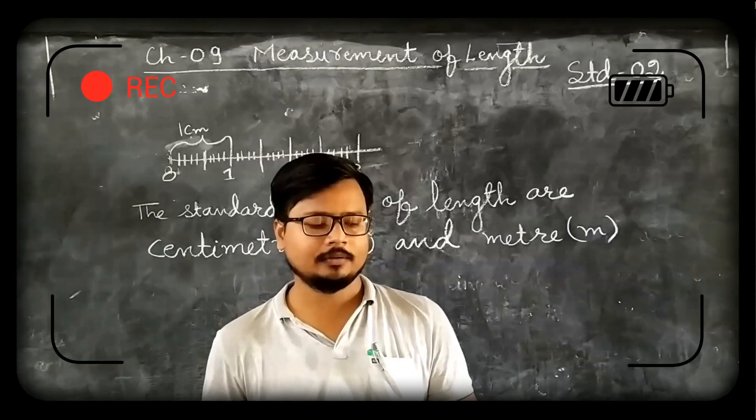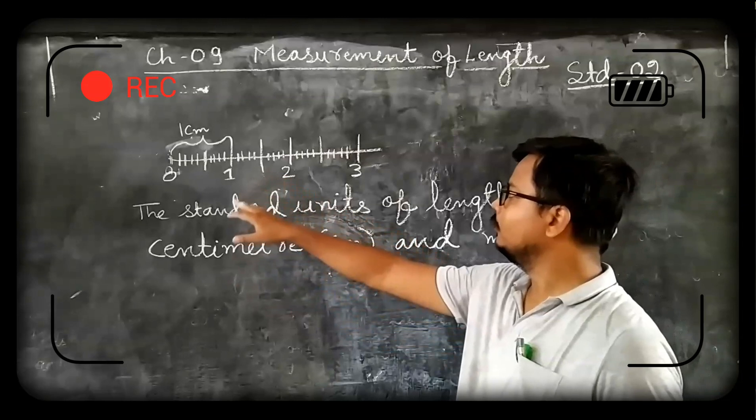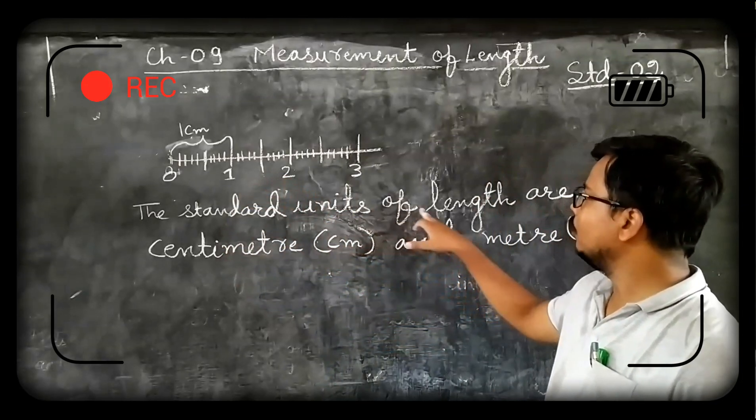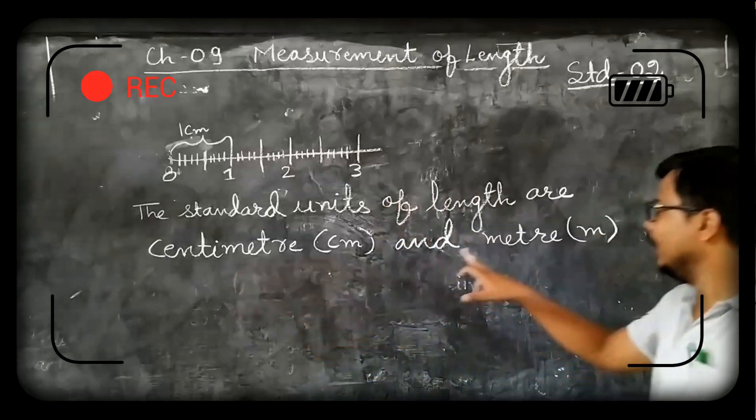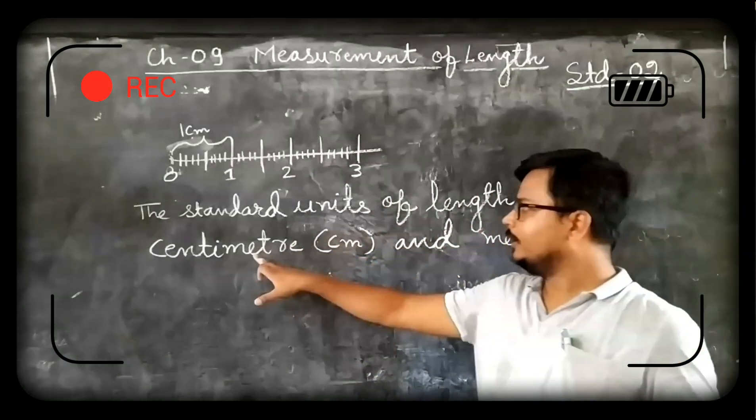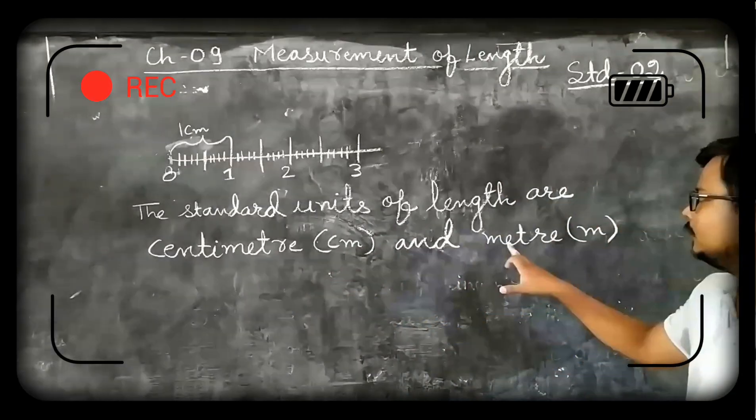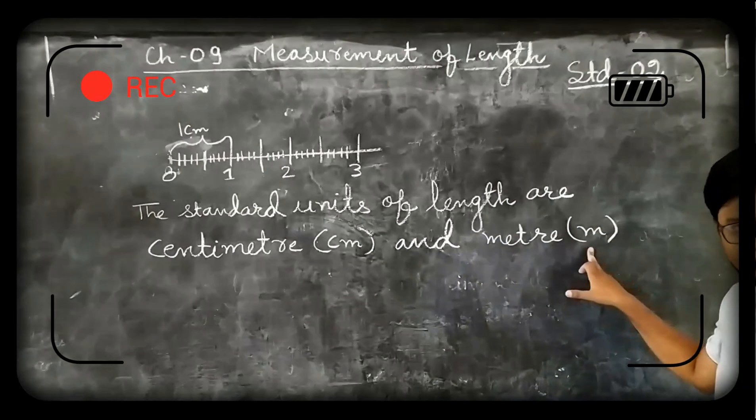Now you can see here I have clearly written: The standard units of length are centimeter and meter. Centimeters we denote as cm and meter is denoted by small m.